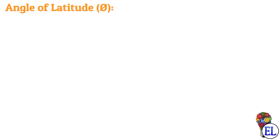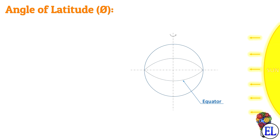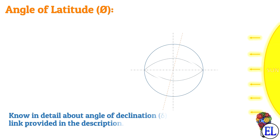We have seen in the last video that the earth is tilted to some declination angle delta with respect to the zenith. If you want to know more about the zenith, the link for that video is provided in the description.